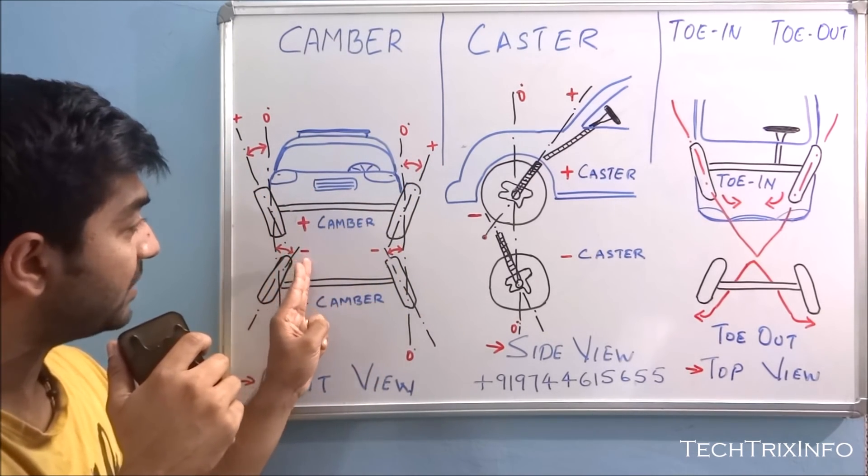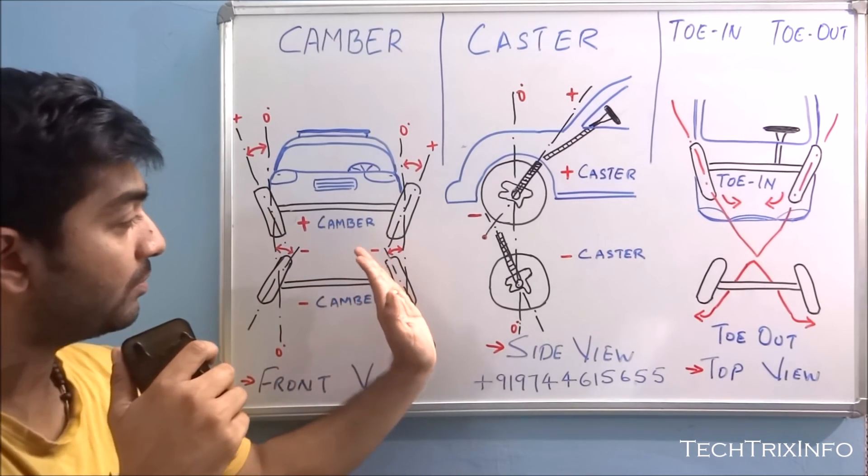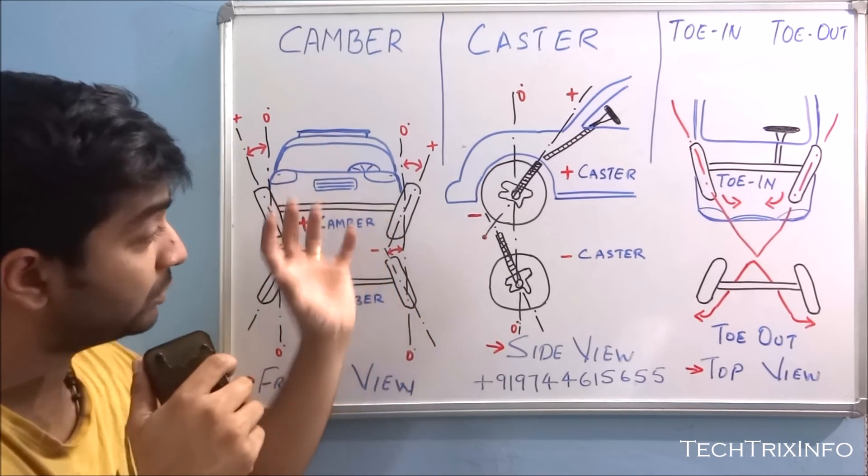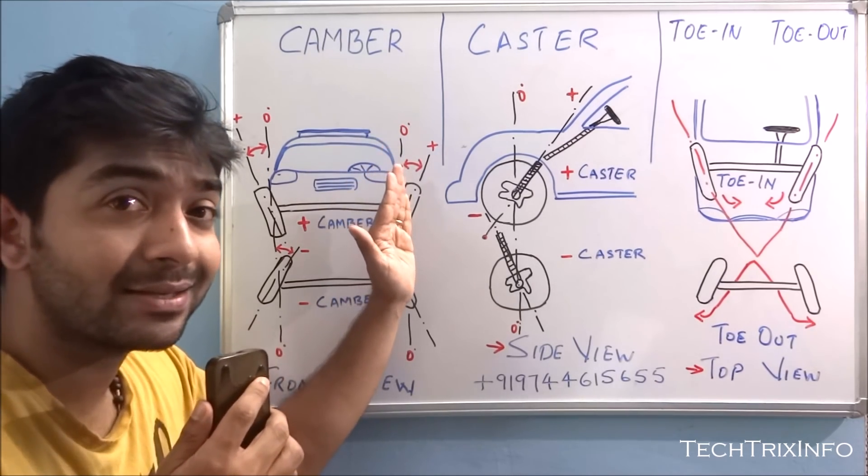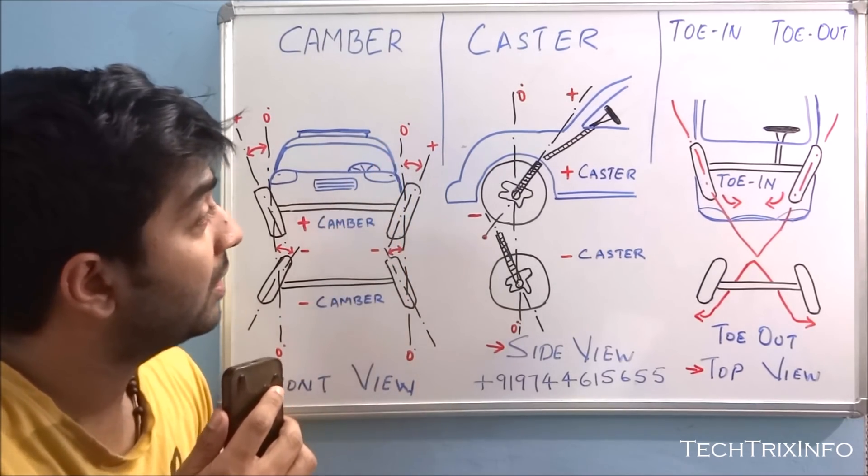And here you can see the angle. This is negative camber here when the bottom end of the tire goes outside. And here when the tires are straight with reference to the vertical axis, there's a zero camber, right?